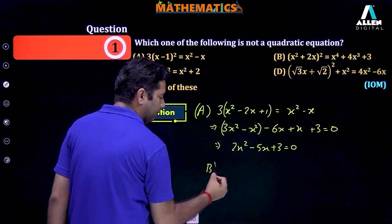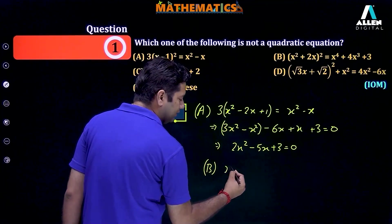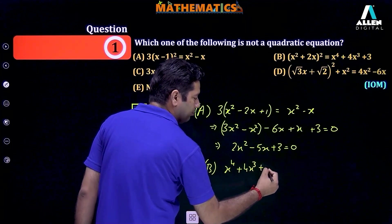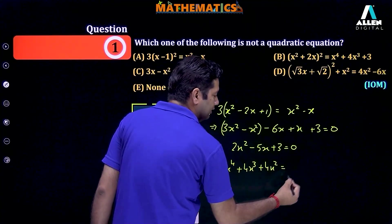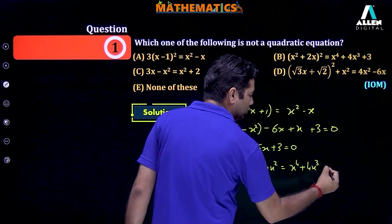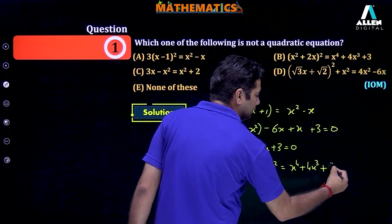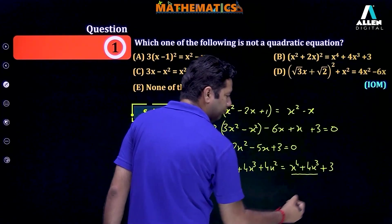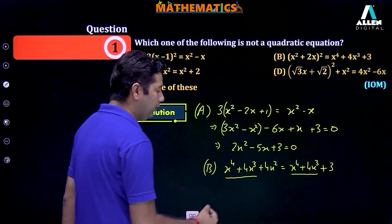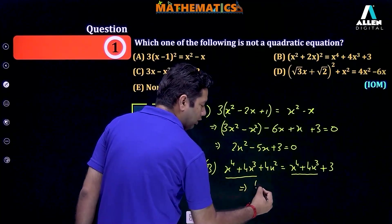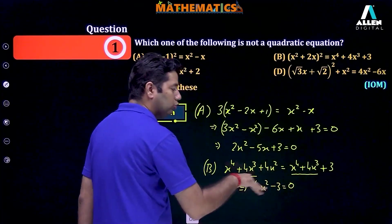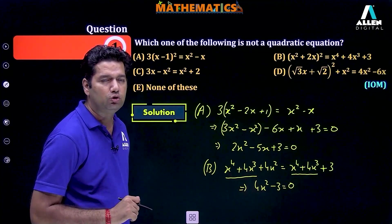For the second option: (x square plus 2x) whole square means x raised to the power 4 plus 4x cube plus 4x square, and this is equal to x raised to the power 4 plus 4x cube plus 3. The x⁴ and 4x³ terms are common on both sides and get cancelled out. We can write this as 4x square minus 3 equals 0. This is also a quadratic equation, so the second option is also not the correct one.